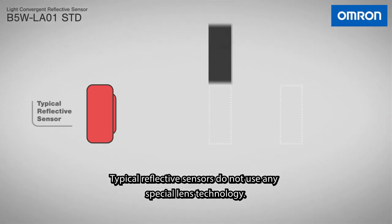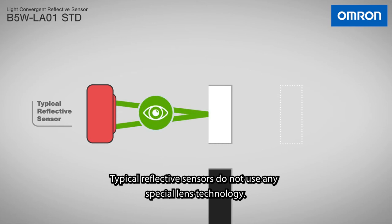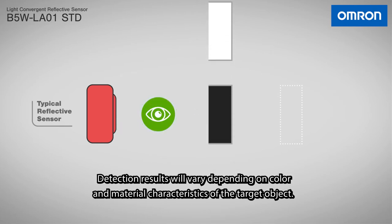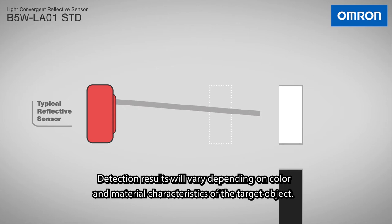Typical reflective sensors do not use any special lens technology. Detection results will vary depending on color and material characteristics of the target object.